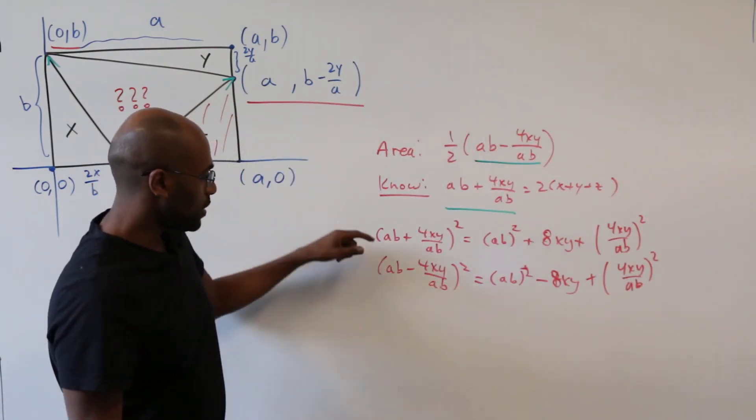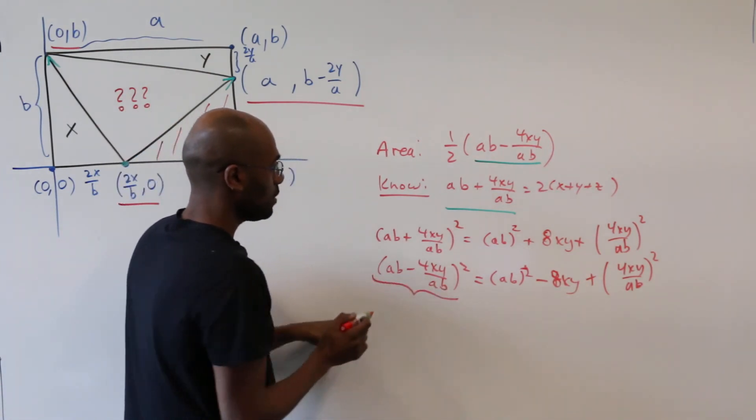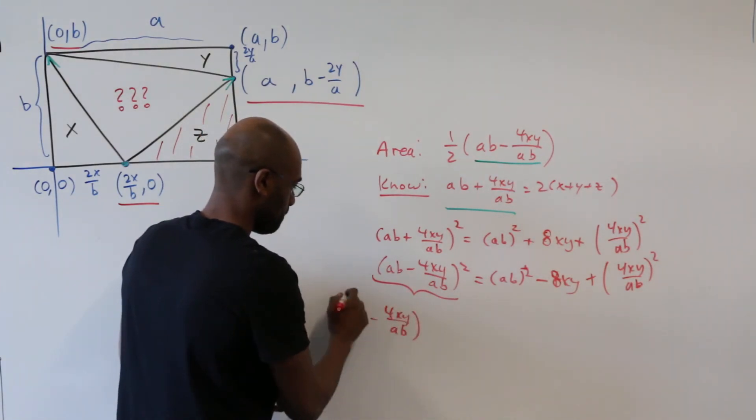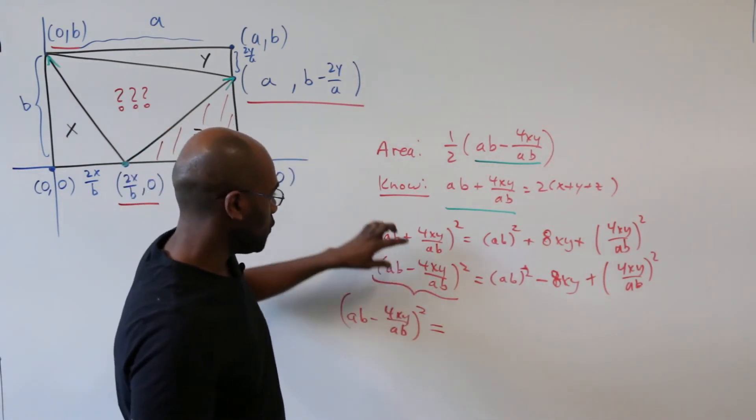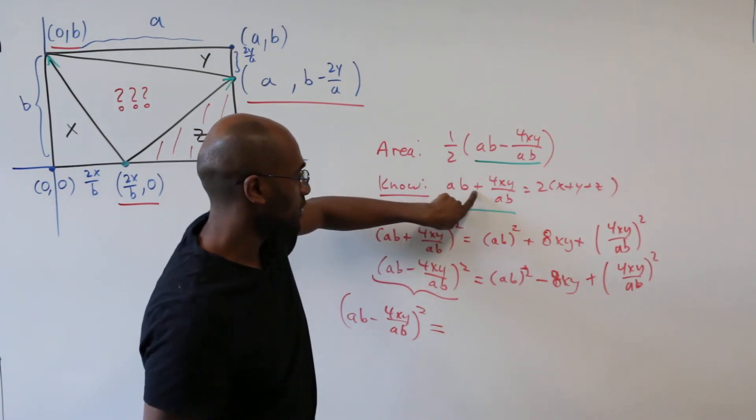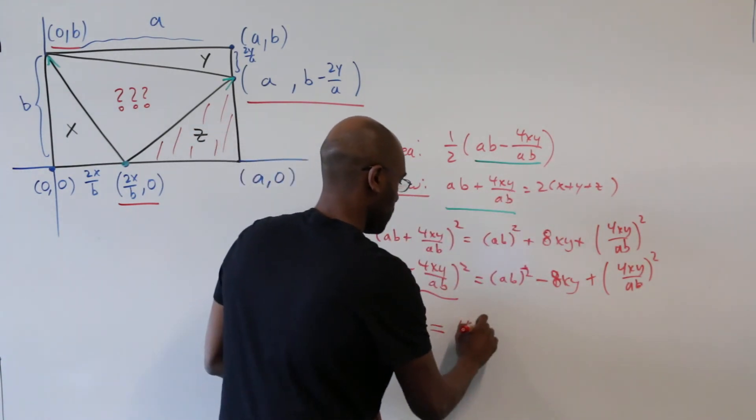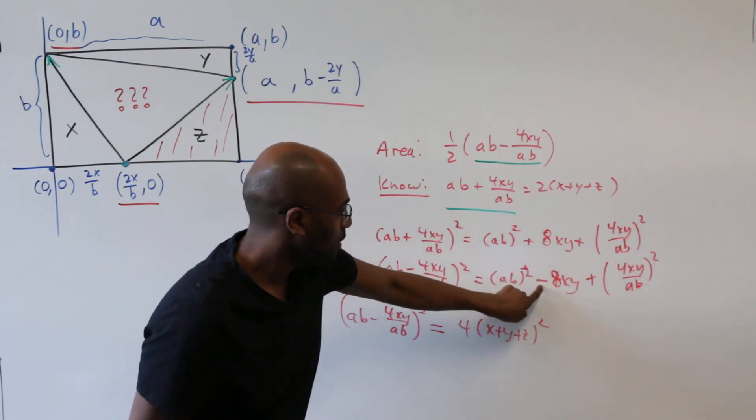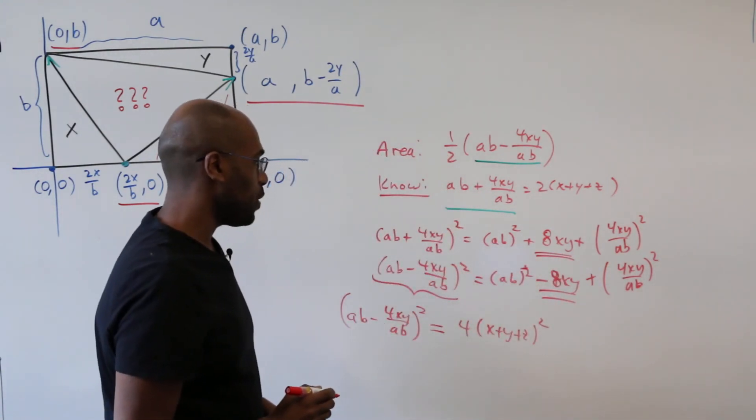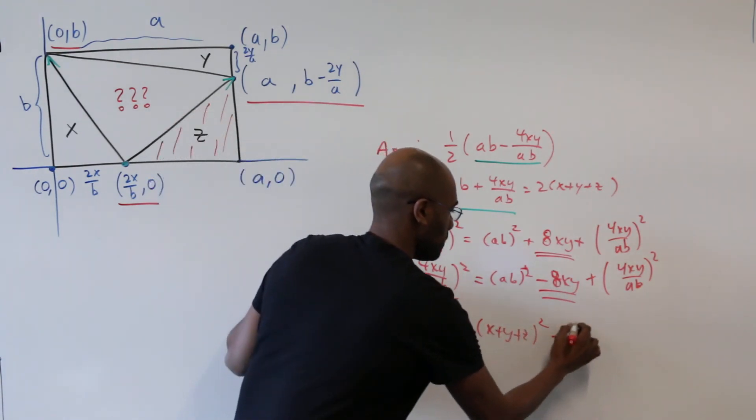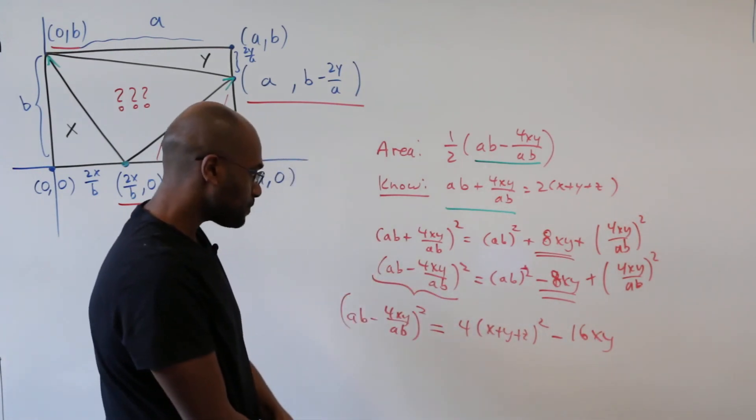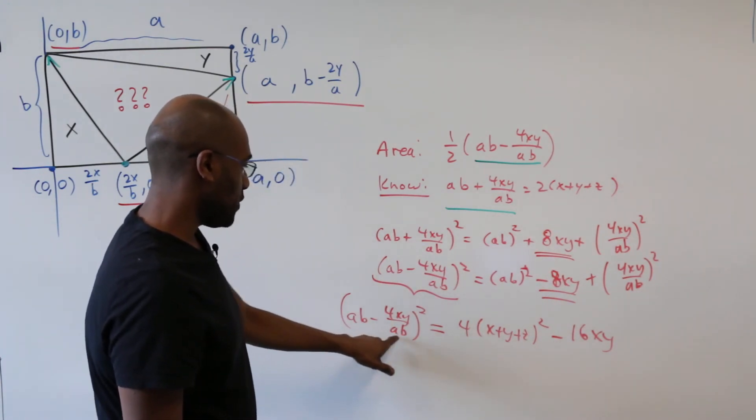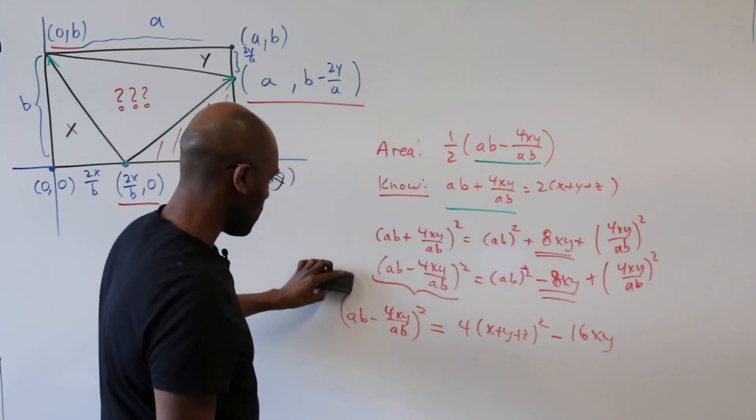Now why is this useful? Well you notice that this quantity then which is the quantity related to the quantity we're interested in is equal to this quantity that we have a value for. This is the square of this thing which is the square of this. So it's 4 times (x + y + z) all squared minus a piece involving only x and y. It's minus 16xy. If we take this and subtract 16xy we get this.